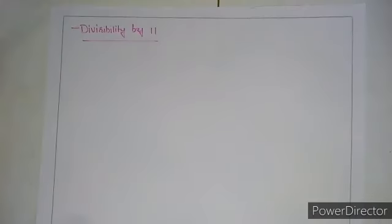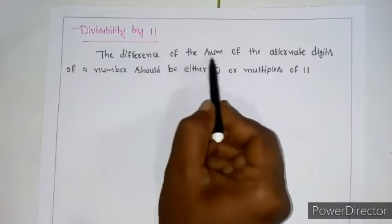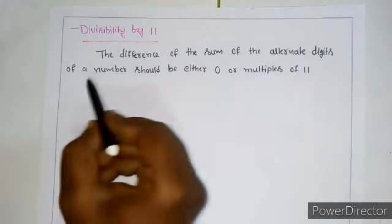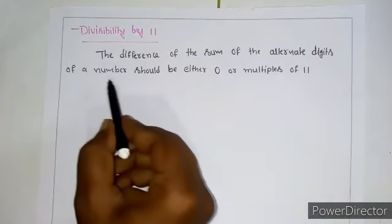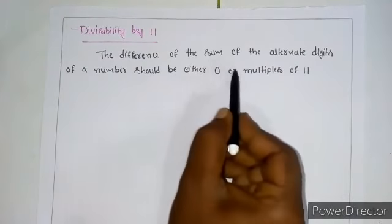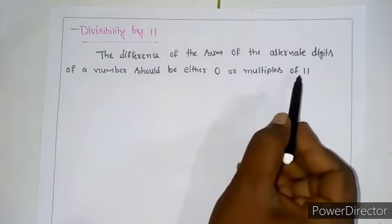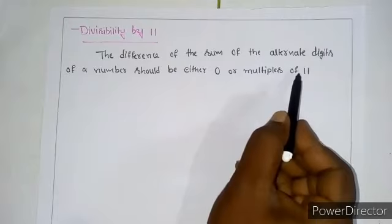Students, next we are going to know divisibility by 11. The difference of the sum of the alternate digits of a number should be either 0 or multiples of 11.